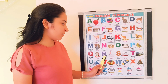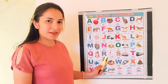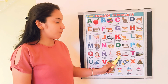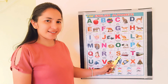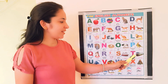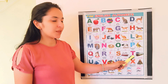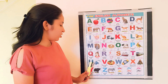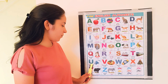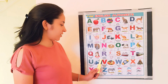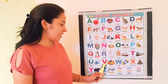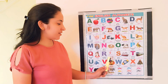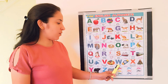R - Purple color. S - Brown color. T - Pink color. U - Green color. V - Red color. W - Blue color.